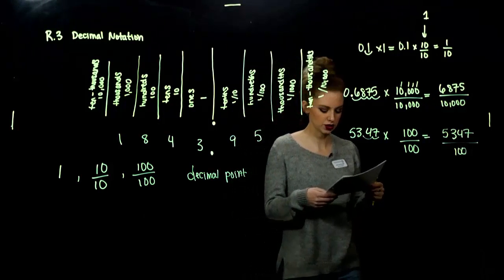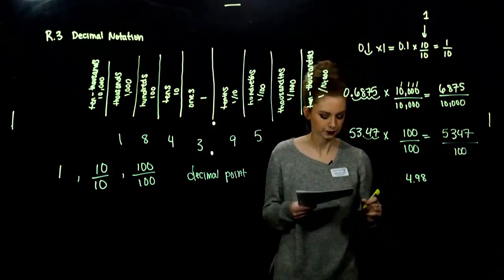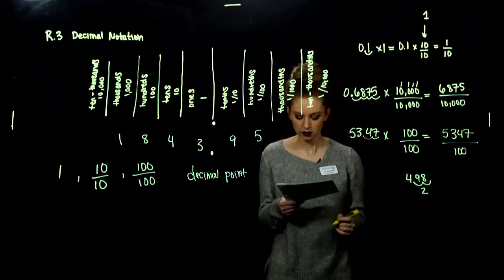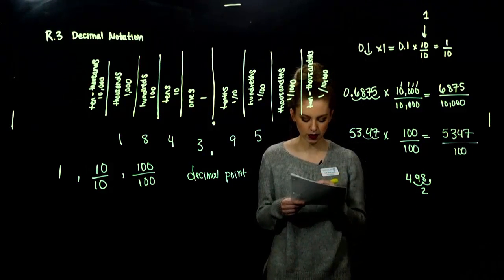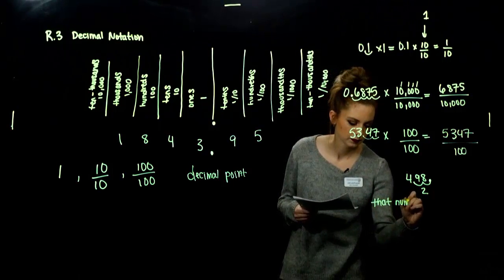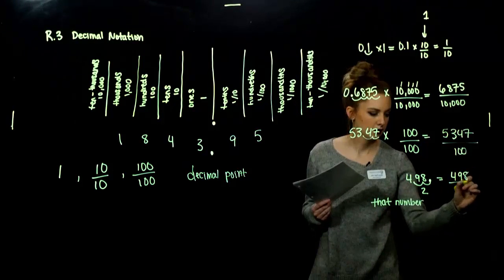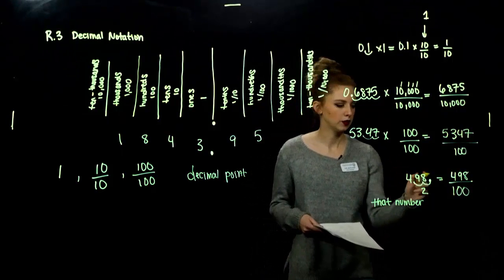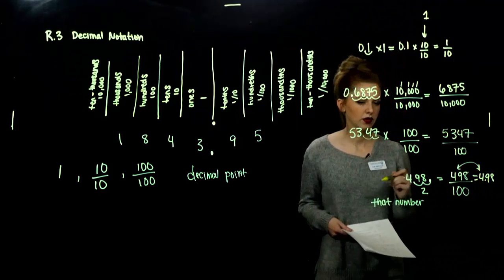To convert from decimal notation to fraction notation, we count the number of decimal places. For example: how many decimal places do I have until I get a whole number? Two. Then move the decimal point that many places to the right and write the result over a denominator with that number of zeros. So I'm looking at 498 divided by one with two zeros — two factors of ten. So 4.98 and 498/100 in fraction notation mean the same thing and represent the same number.